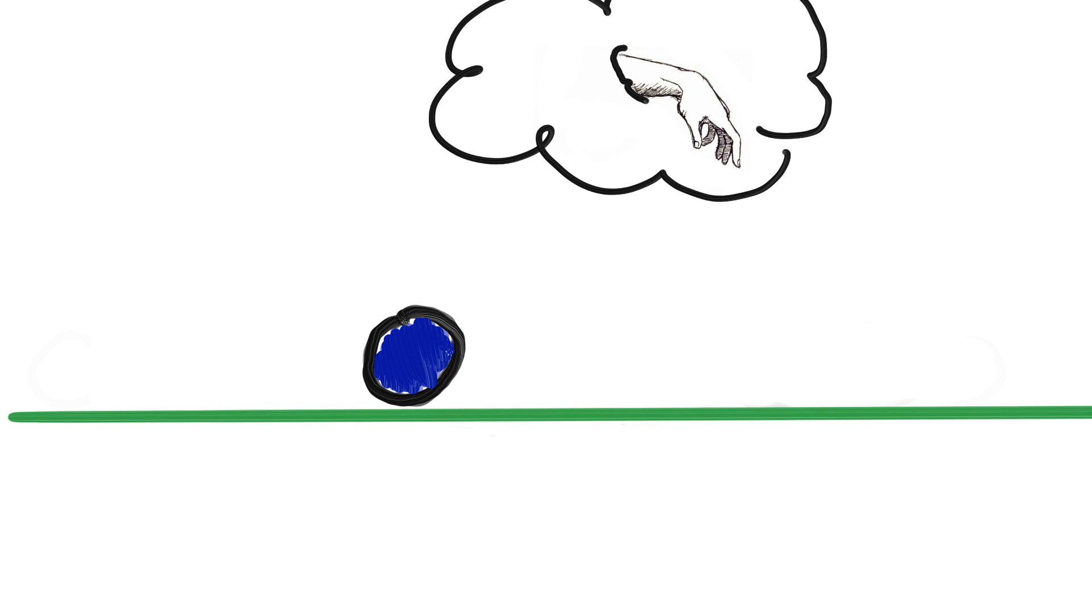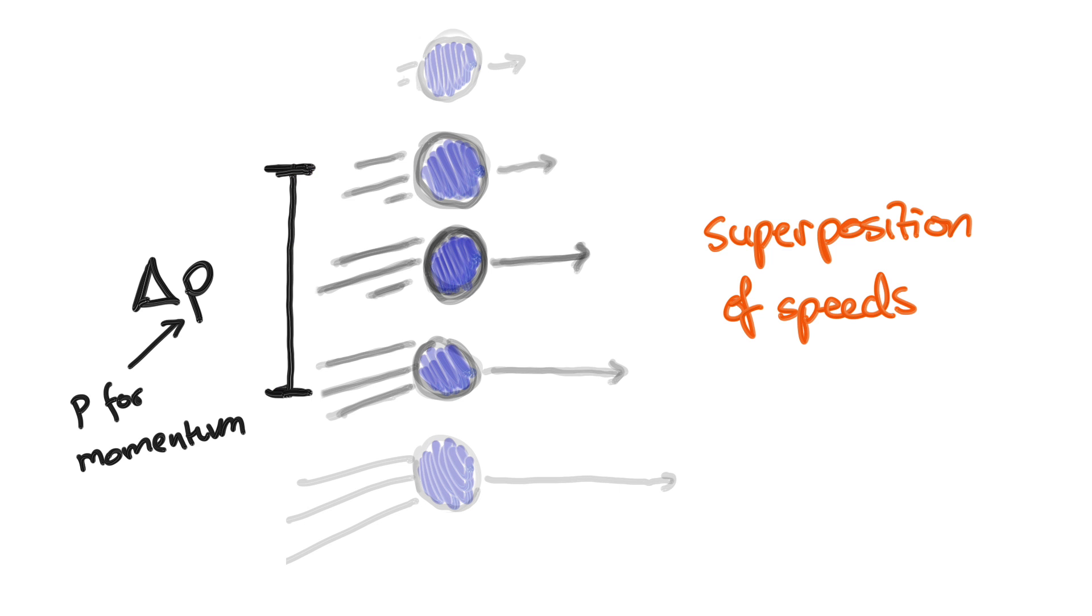Okay, so we can similarly talk about momentum. The particle is in a superposition of speeds. So which speeds are weighted the most heavily? Again, you'll find it's some range, and you quantify the size of this range mathematically in exactly the same way, and call it delta p.